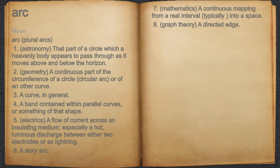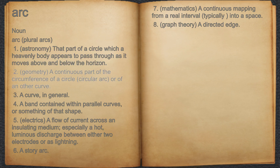Arc. Noun. 1. Astronomy: that part of a circle which a heavenly body appears to pass through as it moves above and below the horizon. 2. Geometry: a continuous part of the circumference of a circle, circular arc, or of another curve.